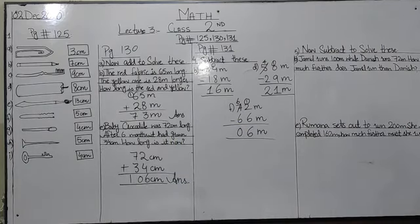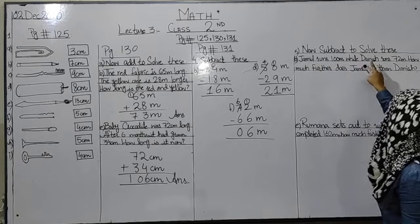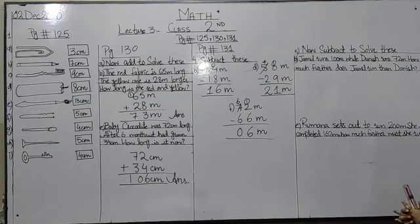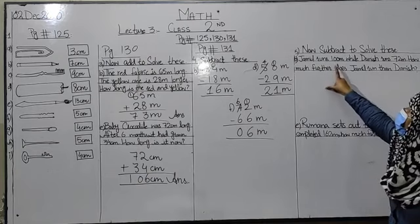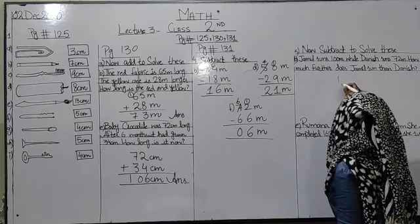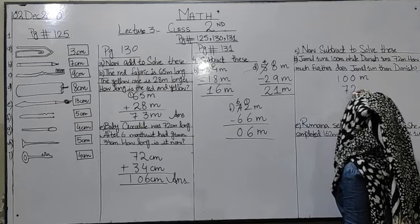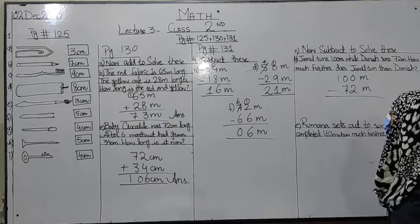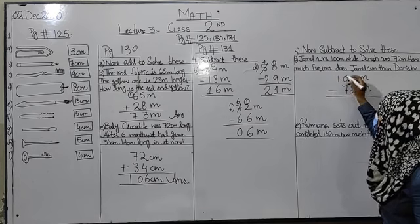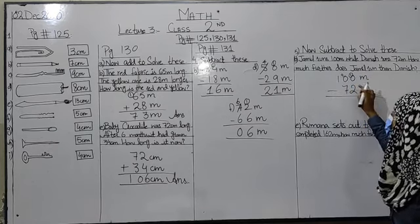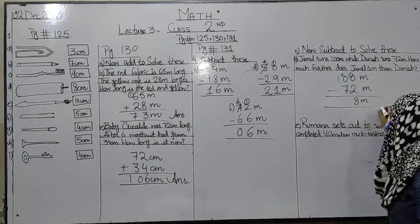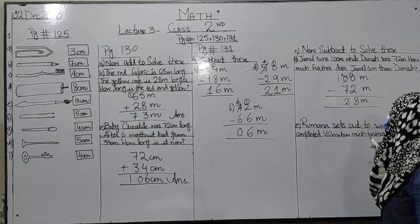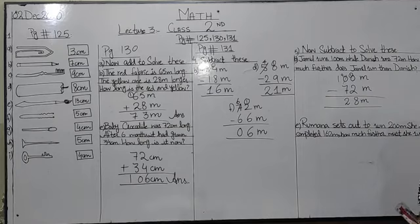Question number 5, B wala: Jamil runs 100 meters while Danish runs 72 meters. How much further does Jamil run than Danish? 100 minus 72 karte hain. 0 mein se 2 minus nahi ho sakta, yahan se carry bhi nahi le sakte, to pehle yahan se carry lenge phir 10 mein se 2 minus kiye 8, 9 mein se 7 minus kiye 2. Answer hai 28 meters.